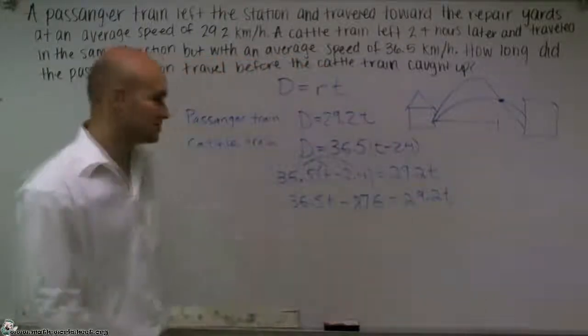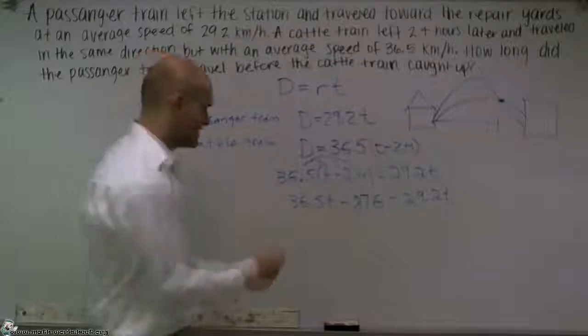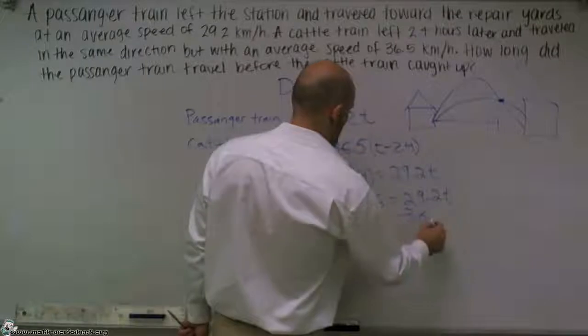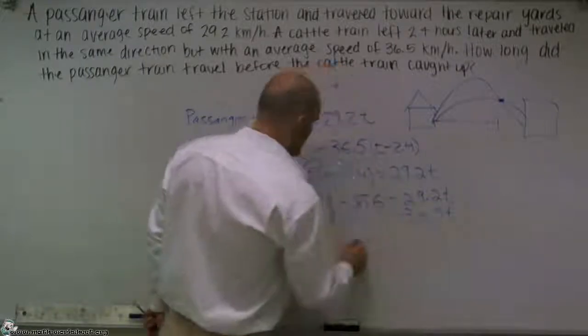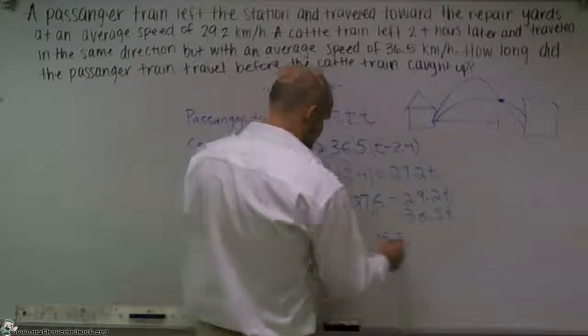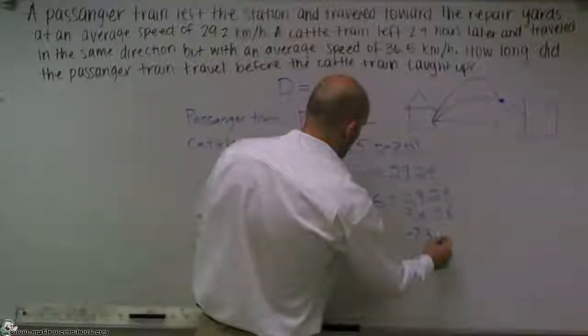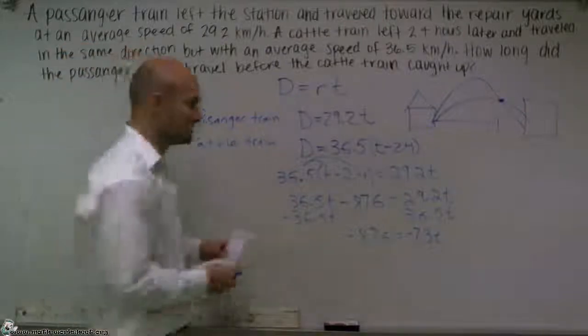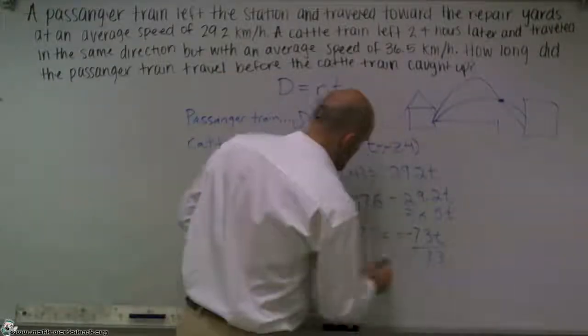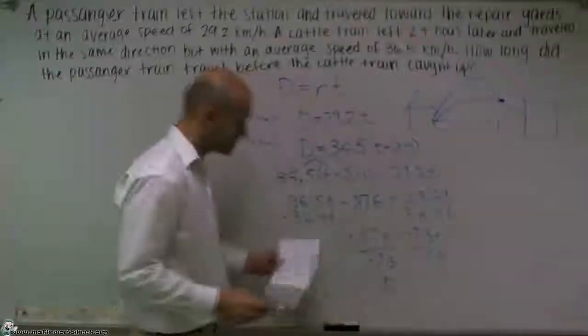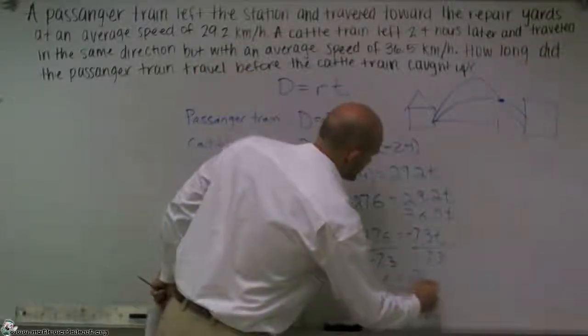Then what I'm going to do is now I'm going to get my variable on the same side. So I'll subtract 36.5T from both sides. I get negative 87.6 equals negative 7.3T. Now, when I solve for T by dividing by negative 7.3, I get T is going to equal 12 hours.